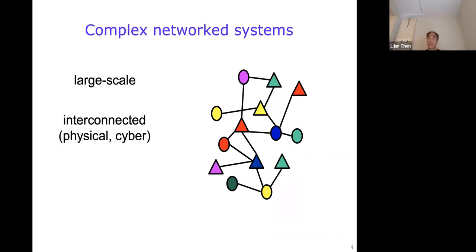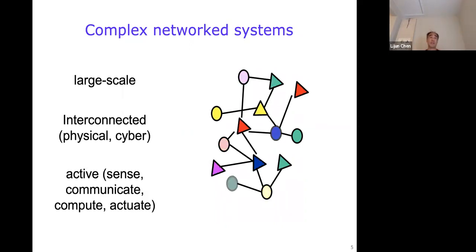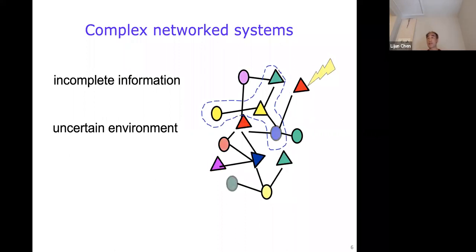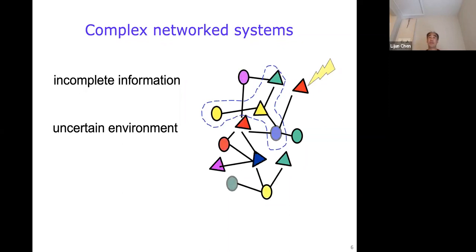These systems are also interconnected either physically or through communication, or both. They are often active — they can sense, communicate, compute, and actuate. They operate with incomplete information. For example, a network component only knows information about its direct neighbors on the network. And the input to the network may be time-varying or random and unknown or only partially known.